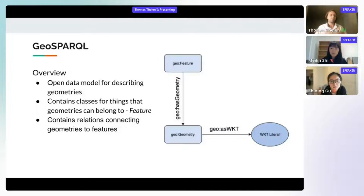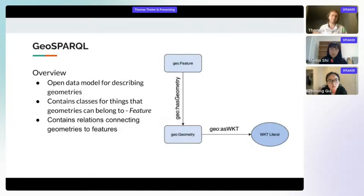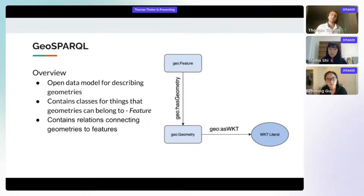Starting with geometry information, we take a close look at a particular subset of GeoSPARQL. GeoSPARQL is an open data model for describing geometries and contains classes for things that geometries can belong to. Here we focus on the GeoSPARQL Feature class. GeoSPARQL has relations that connect geometries to features — a GeoSPARQL feature connects to a geometry node, from which you can ask for a serialization in well-known text. For this presentation, we focus on well-known text.